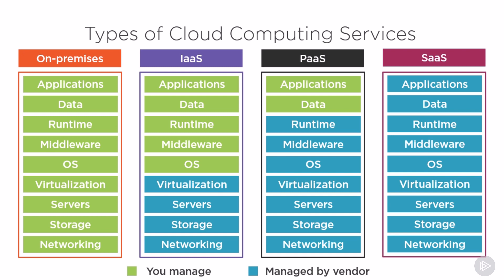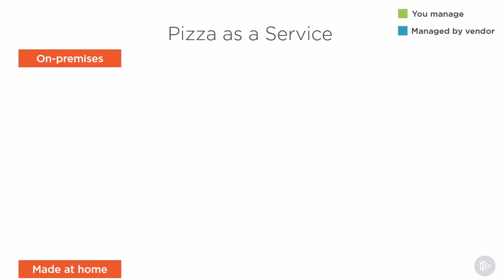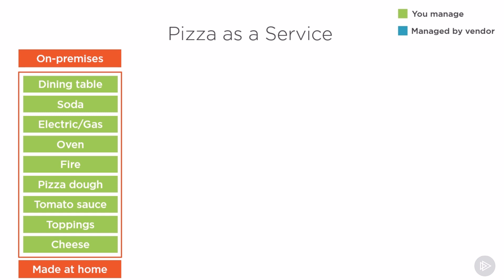A majority of Software as a Service applications are run directly through the web browser and do not require any downloads or installation on the client side. Let's take a look at the same model from a different perspective and compare our cloud computing services to everyone's favorite food, pizza. Our on-premises model would be similar to making pizza at home from scratch — you make your own dough, you cut your own toppings, you put it in your own oven, and you eat it at your own table.